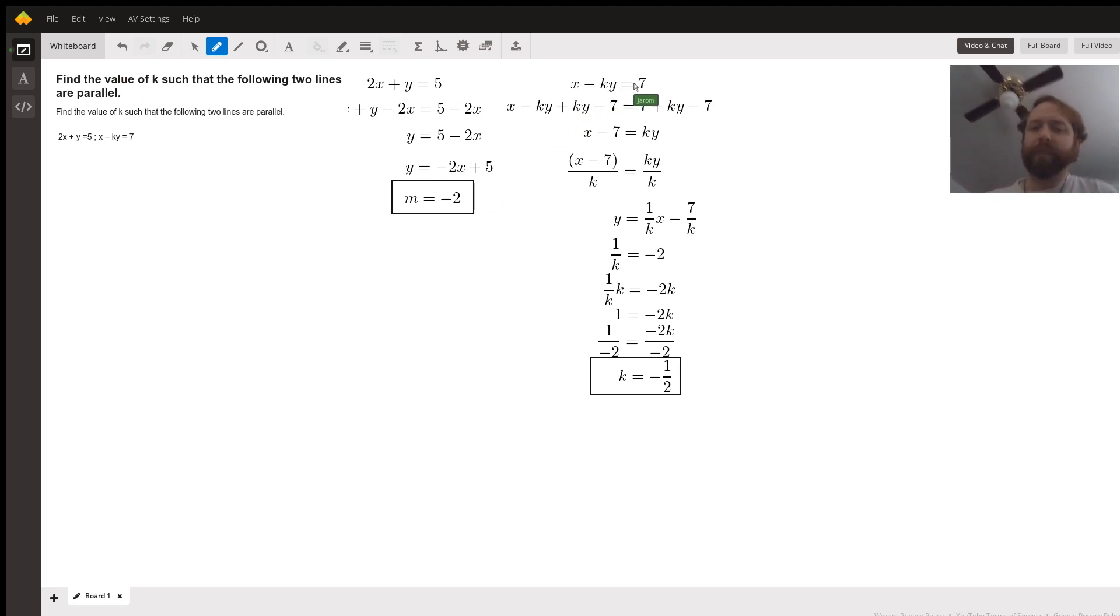So x minus ky equals 7. Again, we want to get this in slope-intercept form. We're going to add ky and subtract 7 from both sides at the same time.